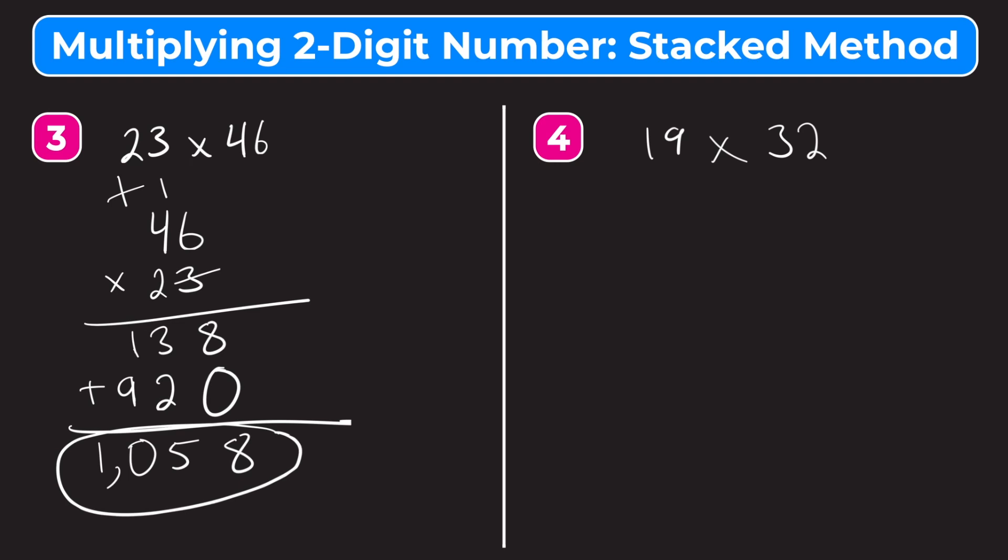Our last example here, we have 19 times 32. So let's rewrite this, which number goes on top? The larger one, 32, right? So we put 32 times 19, our line, and we multiply through. 9 times 2, it's going to be 18, so we write our 8, carry the 1. 9 times 3, it's going to be 27, plus 1 is 28. So 28, there's nowhere else to carry, so we write the 28.